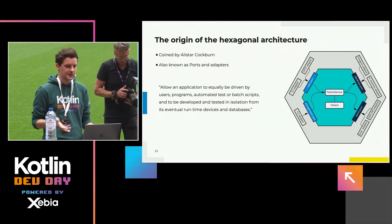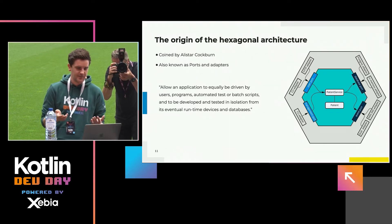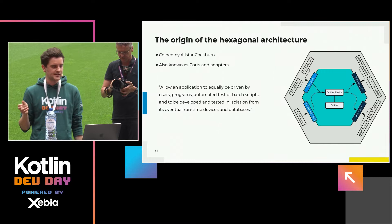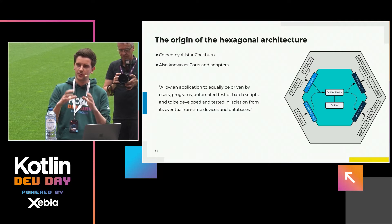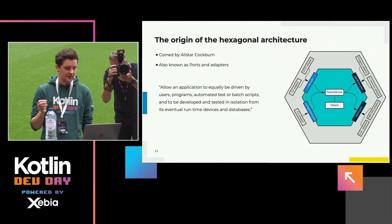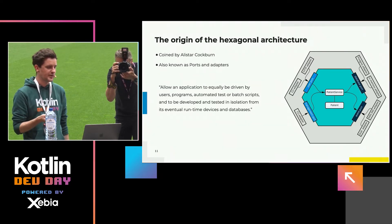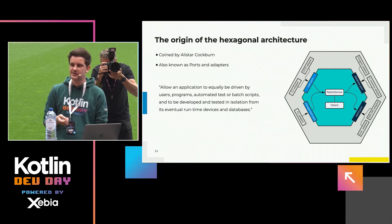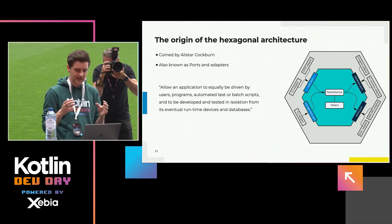A bit about the origin of the hexagonal architecture. It's a pattern coined by Alistair Cockburn, also known as co-author of the Agile manifesto. It's also known as the ports and adapters pattern — you define your domain logic, define your ports, and the adapters can interact with your domain. The original intent was to allow an application to equally be driven by users, programs, automated tests or batch scripts, and to be developed and tested in isolation from its eventual runtime devices and databases.